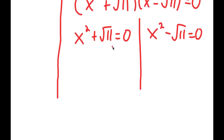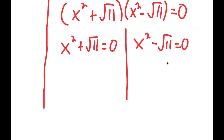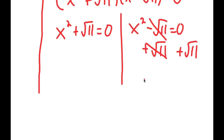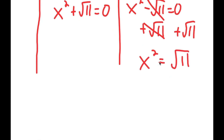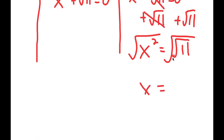For x squared minus the square root of 11 equals 0, I'll add the square root of 11 on both sides so I get x squared equals the square root of 11. Now if I take the square root on both sides, the square root of x squared is x, and the square root of the square root of 11 is the fourth root of 11. This gives positive or negative fourth root of 11.